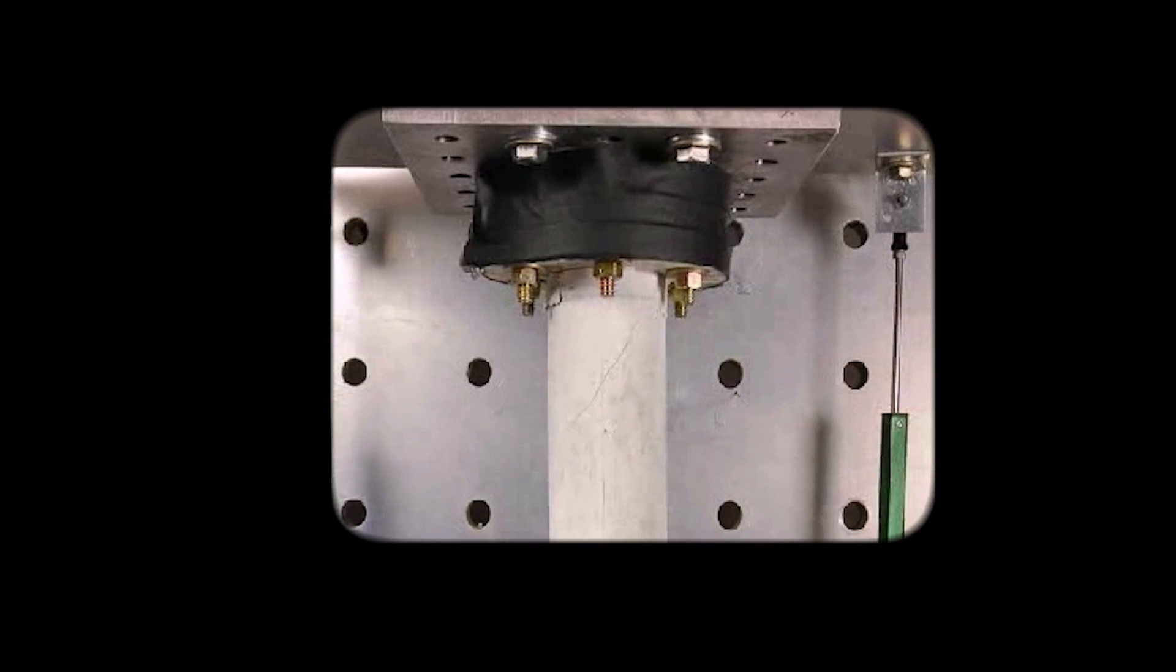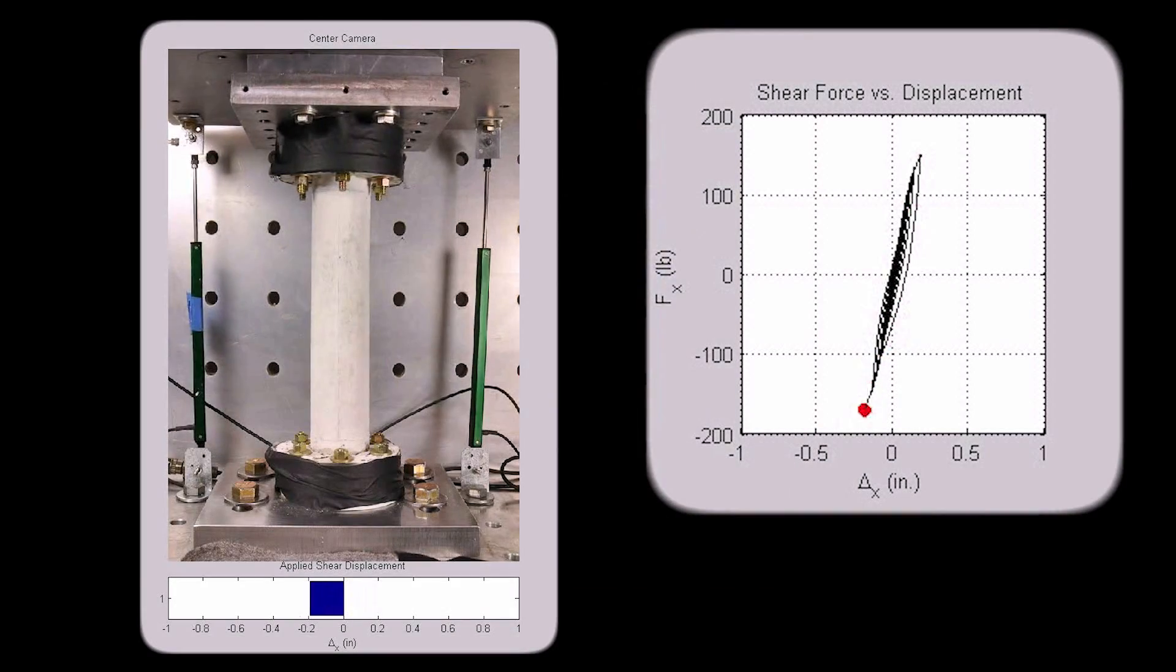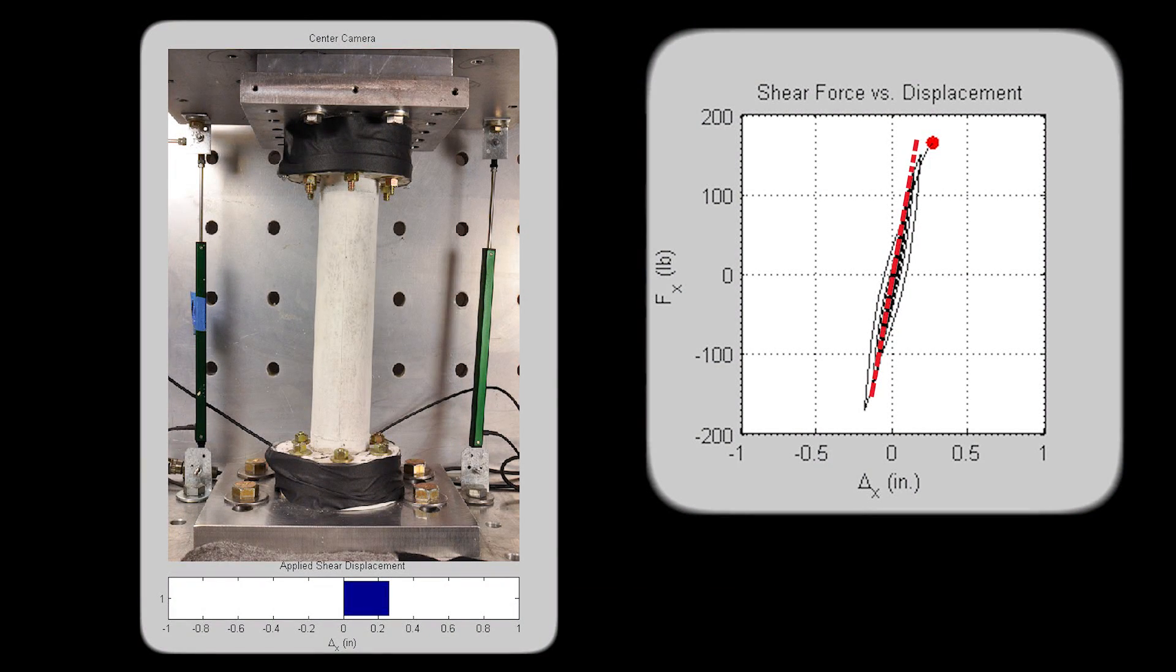The cracks open and close based on the direction of the displacement. Cracking is accompanied by a softening of the structure, as seen in the loss of linear behavior.